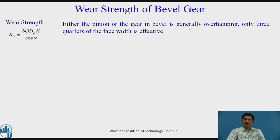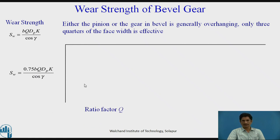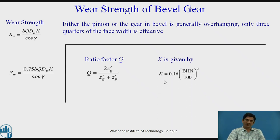Either the pinion or the gear in bevel is generally overhanging. Only three quarters of the face width is hence effective. Therefore, we need to introduce 0.75 in the equation and hence equation SW changes to 0.75 BQ DPK upon cos gamma. The ratio factor QE is given by 2ZG dash upon ZG dash plus ZP dash. K is given by 0.16 BHN upon 100 bracket square. QE can be also obtained by 2ZG upon ZG plus ZP tan gamma.